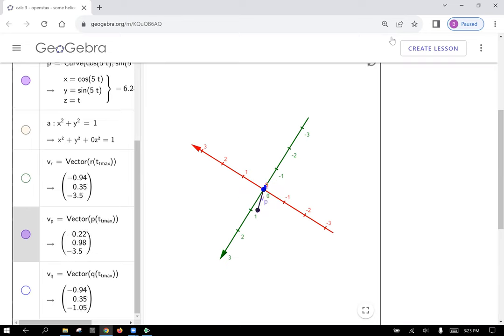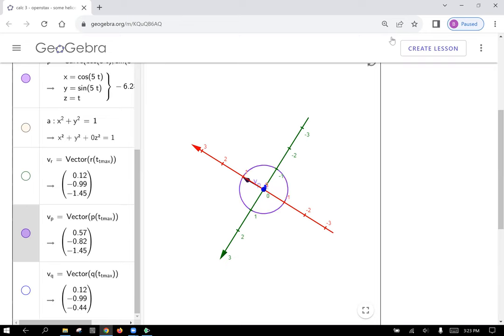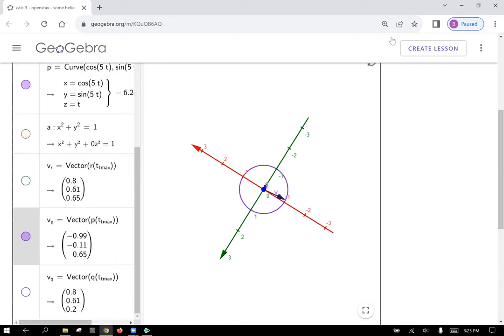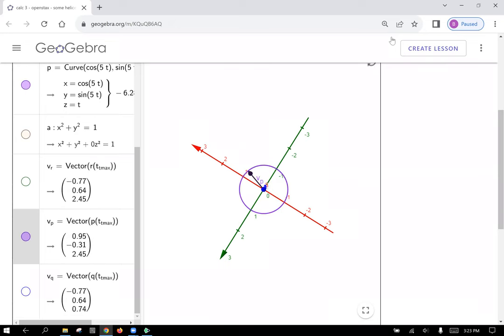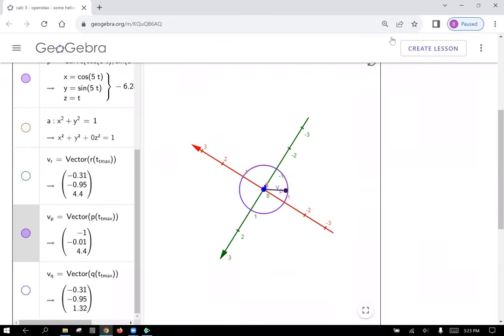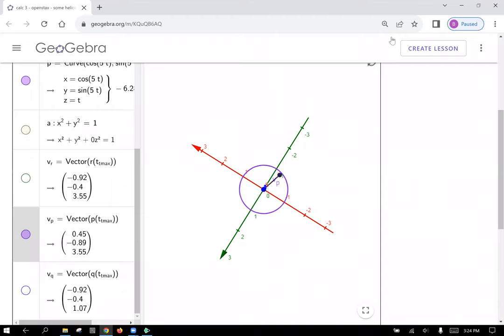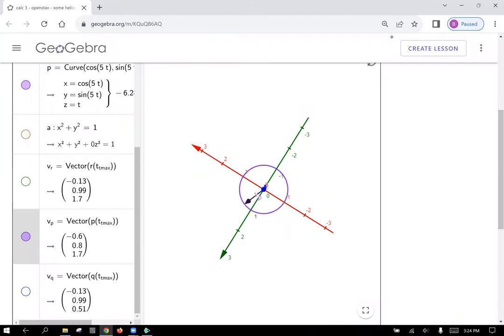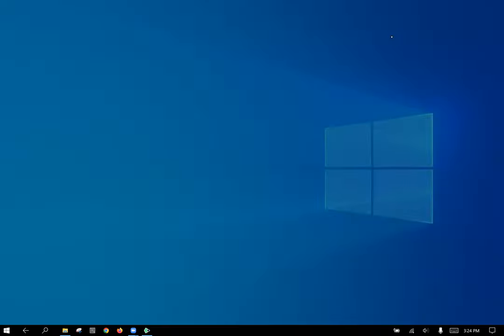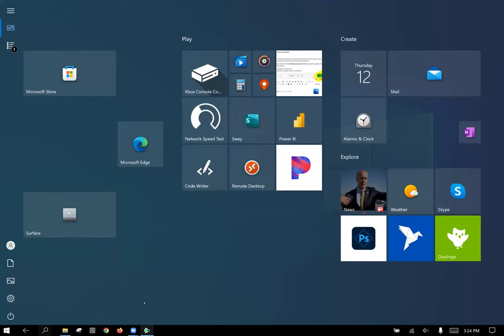You can see that x is defined to be cosine of 5t, and y is sine of 5t, and cosine of whatever for x coordinate, sine of whatever for y coordinate. As long as the inputs are the same, it's going to give you the unit circle as we can see here.